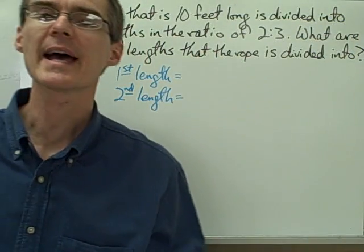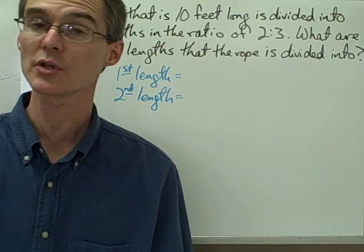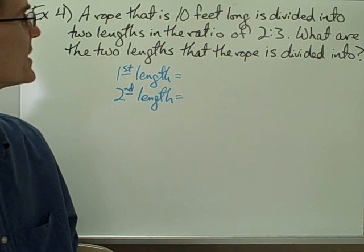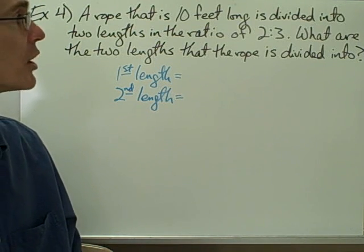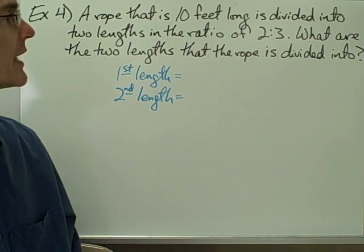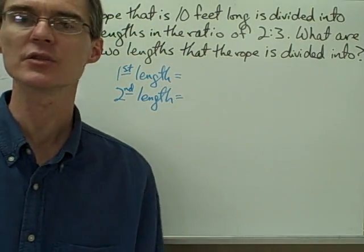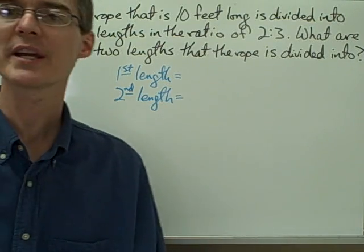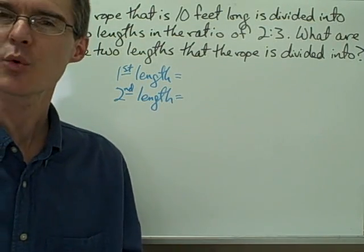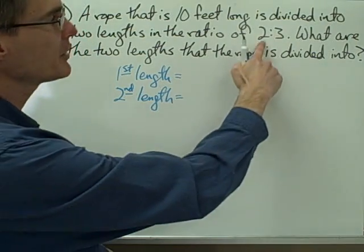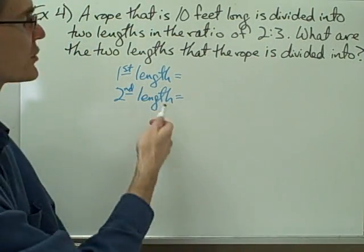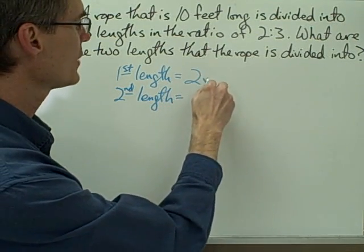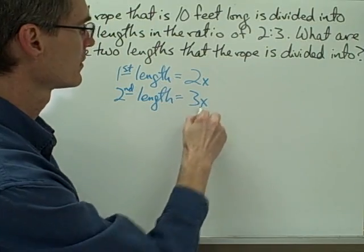Now let's look at a type of problem you often see that can be solved using ratios. Example number four says a rope that is ten feet long is divided into two lengths in the ratio of two to three. What are the two lengths the rope is divided into? I'm going to start by picking two algebraic expressions for my two lengths. I don't know what the two lengths are yet — I only know that they are in the ratio of two to three. So the algebraic expressions I'll choose are 2x and 3x.